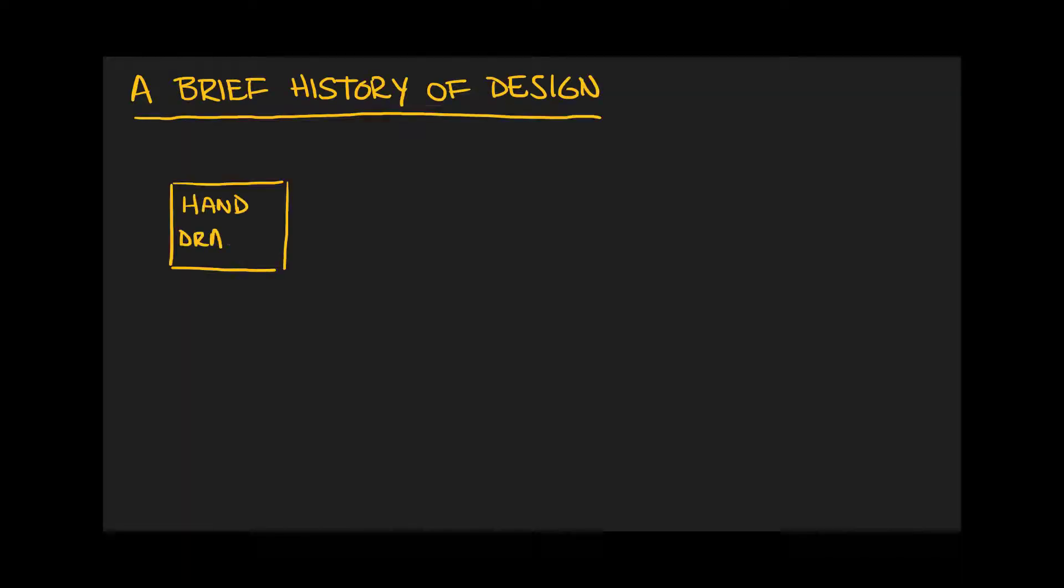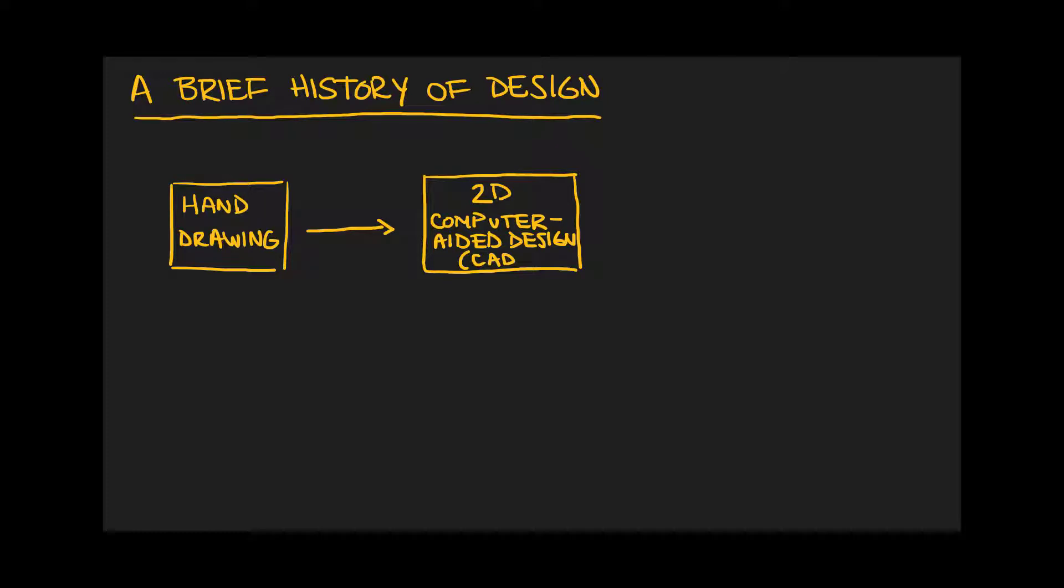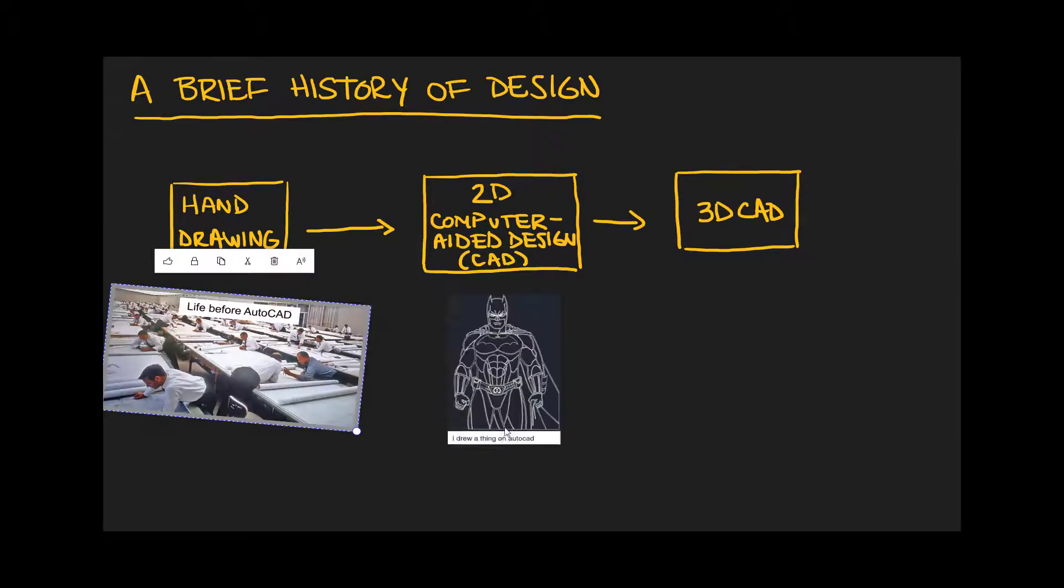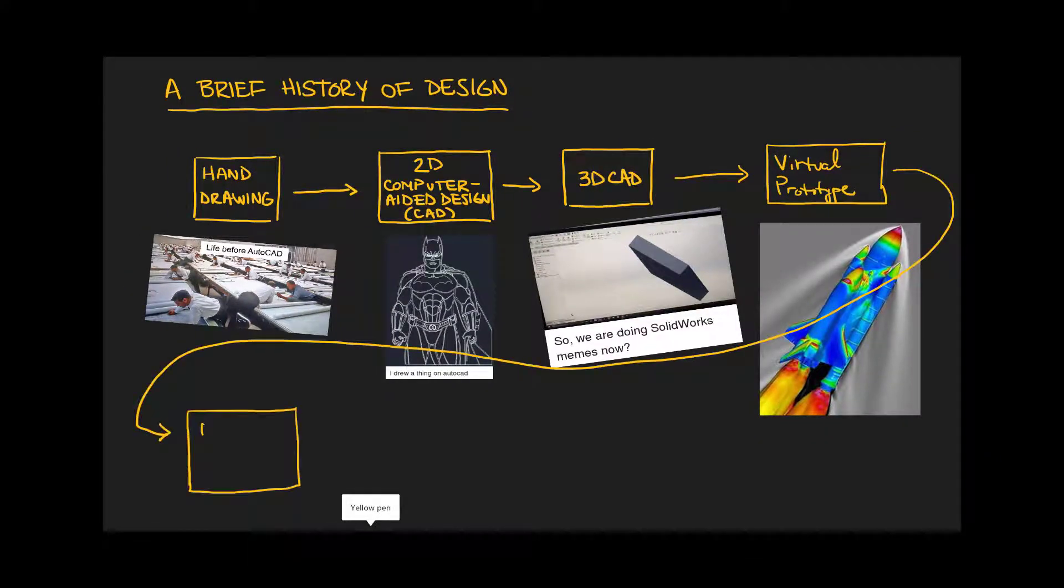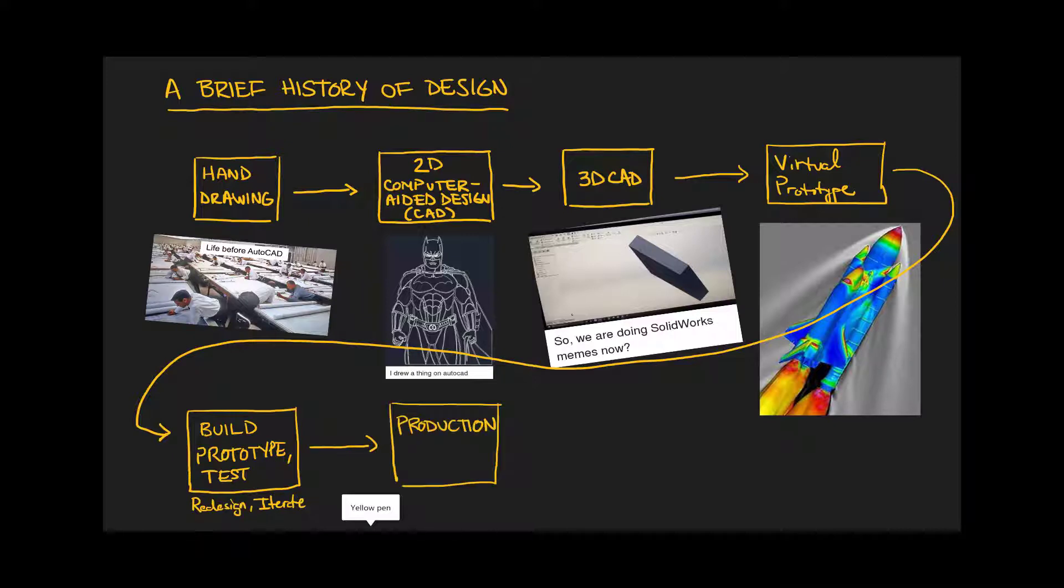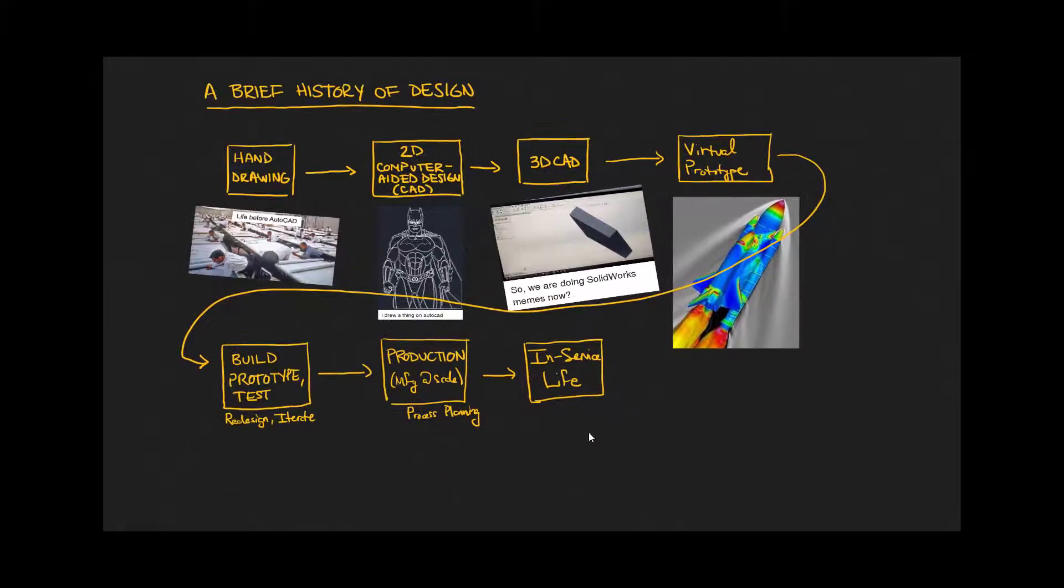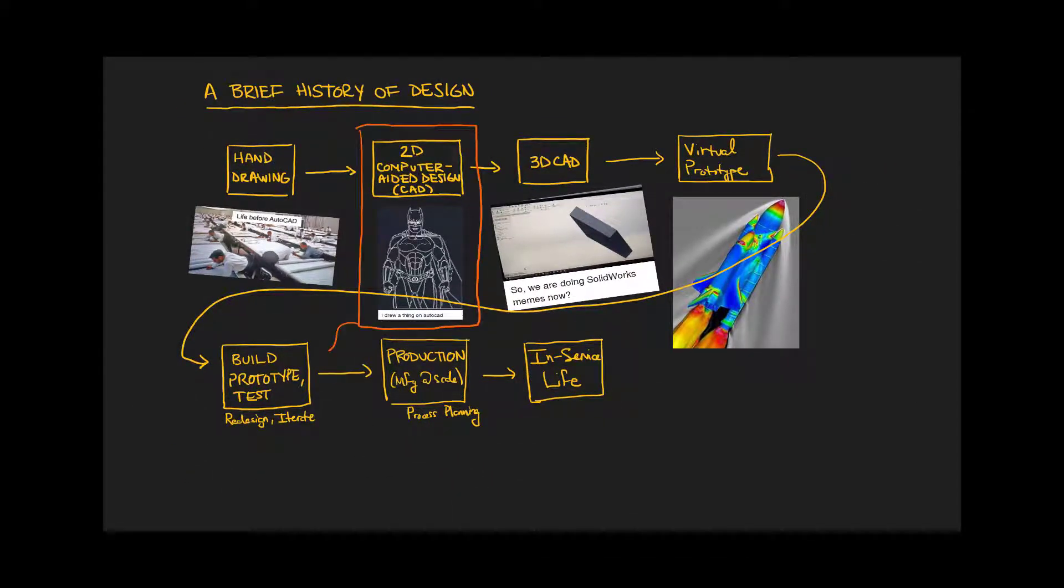Let's take a brief tour of the history of design: from hand drawings to 2D computer drawings to 3D computer drawings, to simulations of 3D computer drawings, to actually building those things that we simulated and drew, then testing them, producing them at scale before they go in service and actually do stuff.